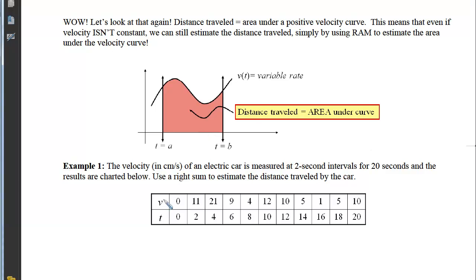For example, let's look at this table of data. The velocity is given to us in centimeters per second for an electric car, and it's measured every 2 seconds for 20 seconds, and the results are given in this chart. I want to use the right sum to estimate the distance traveled by the car. Now, this one's a little tricky because our v is the outputs, and our t is the inputs, so we're going to be reading the chart a little bit differently than usual. Here's our inputs. Here's our outputs.